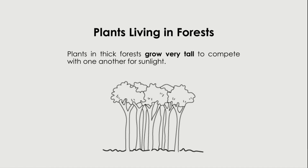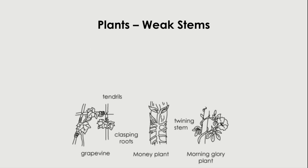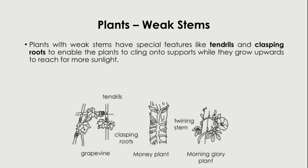Plants living in forests usually grow very tall because they compete with one another for sunlight — a short tree would not receive any sunlight. Plants with weak stems have special features like tendrils and clasping roots to enable them to cling onto other supportive structures like other plants or poles, while they grow upwards to reach for more sunlight.